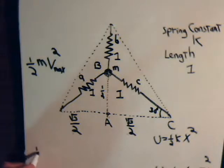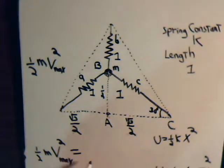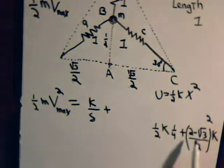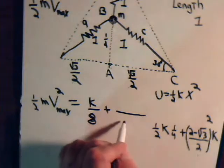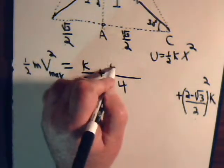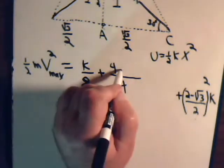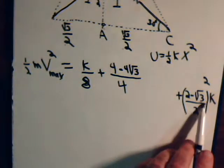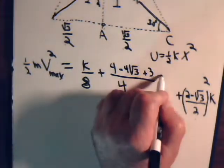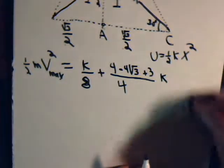So we have one-half m v_max squared equals k/8 plus k·[(2−√3)/2]². Expanding the squared term: 2² = 4, minus 2·2·√3 = 4√3, plus (√3)² = 3, giving 4 − 4√3 + 3 = 7 − 4√3. So the right side becomes k/8 plus k·(7−4√3)/4, which equals k(1/8 + (7−4√3)/4).